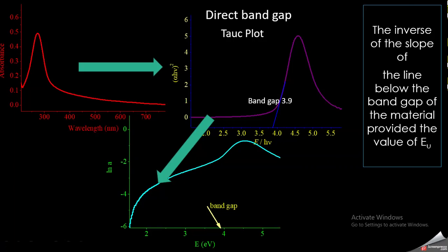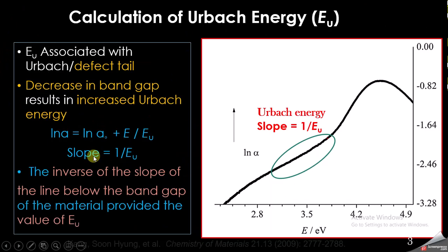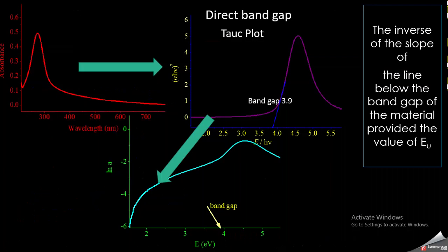To find the Urbach energy, you need to find the slope of the straight line in the plot, but it should be below the band gap of the material. Since the band gap is 3.9 electron volts, calculate the slope of this straight line below that value. The inverse of this slope gives the Urbach energy, as shown in the equation where the slope equals 1/Eu — so the inverse of the slope gives the value of Urbach energy.